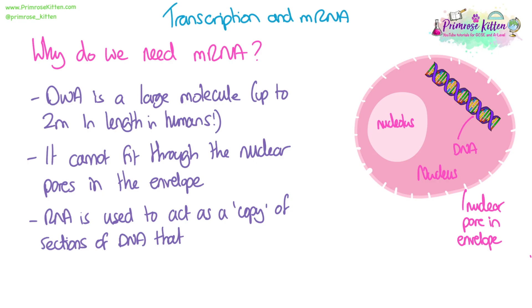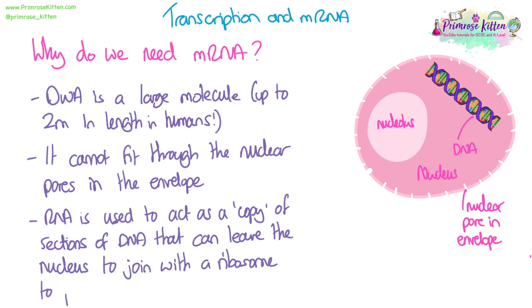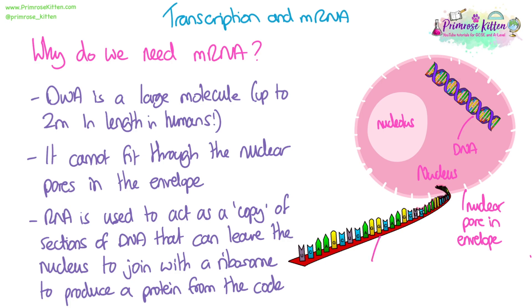So what we do is we use RNA to make a copy of the sections of DNA that we want to use in order to read them to produce proteins, and this is small enough and short enough that it can leave the nucleus through those pores. So here's my mRNA and what it's doing is it's leaving the nucleus through the pore. It's mRNA — remember M for messenger — so it's carrying that message of the DNA code that it's copied and taking it to the ribosome where it will produce a protein from that code.